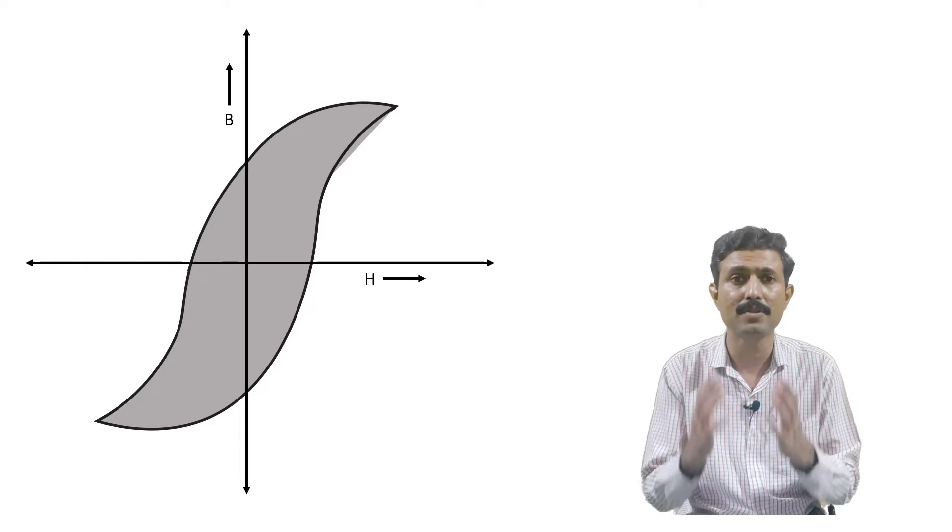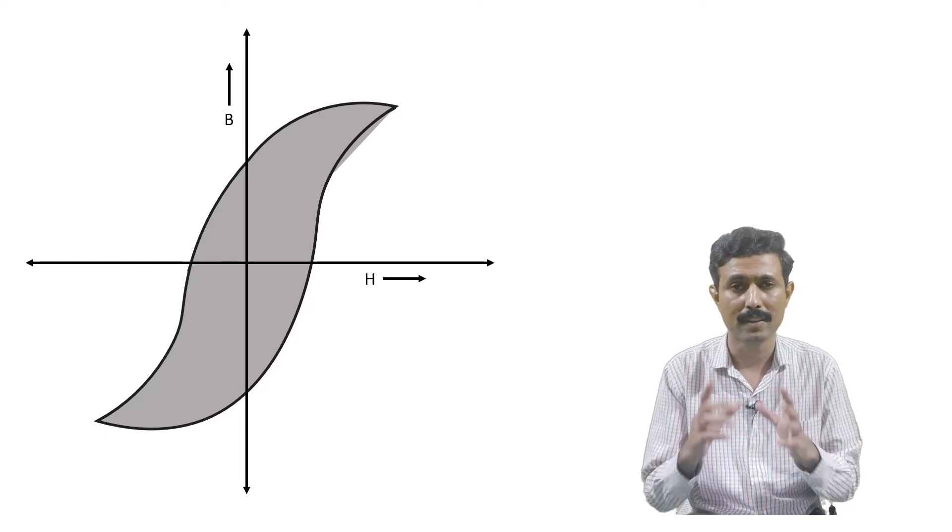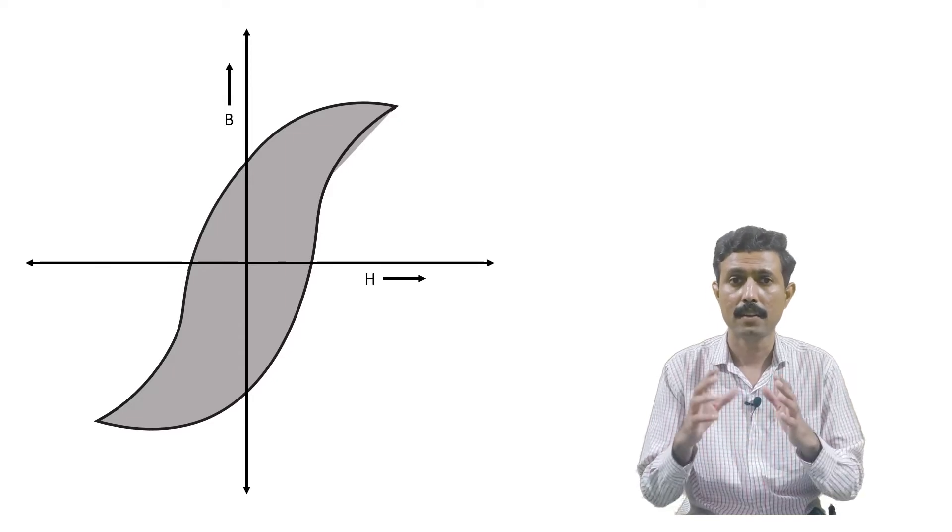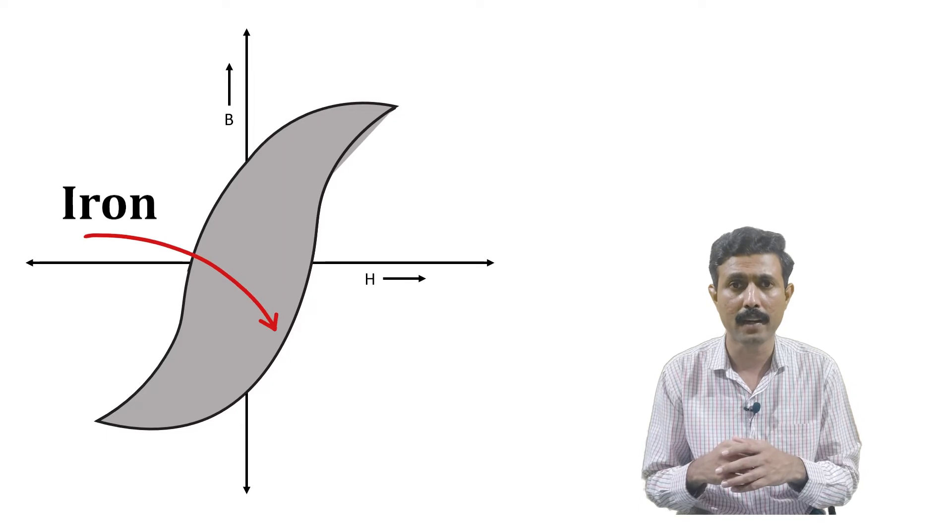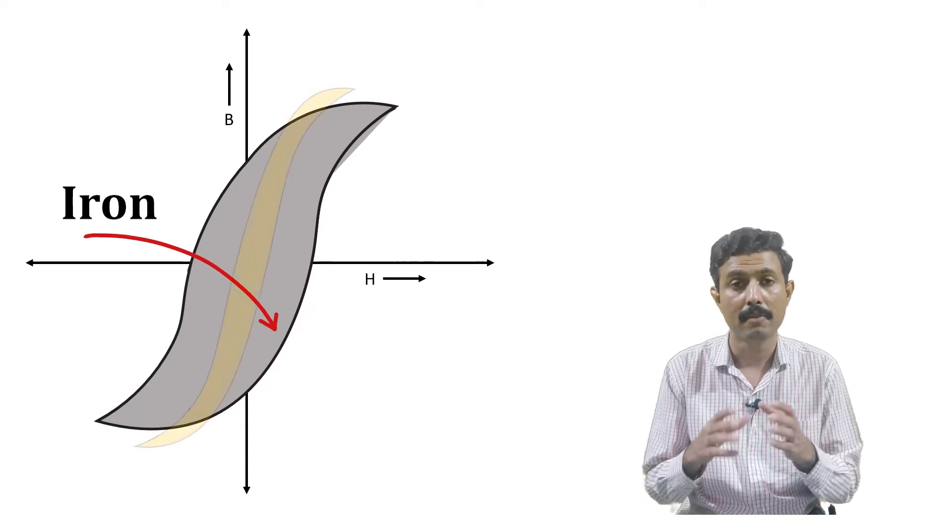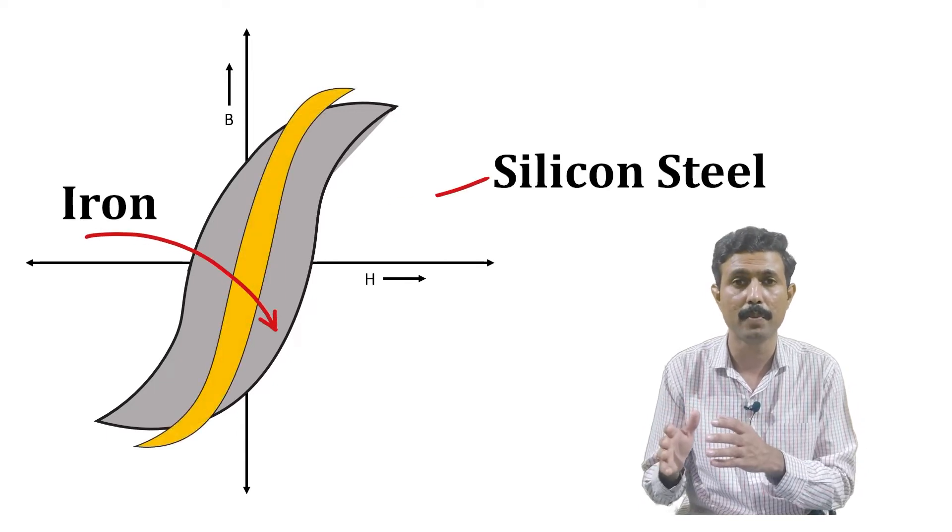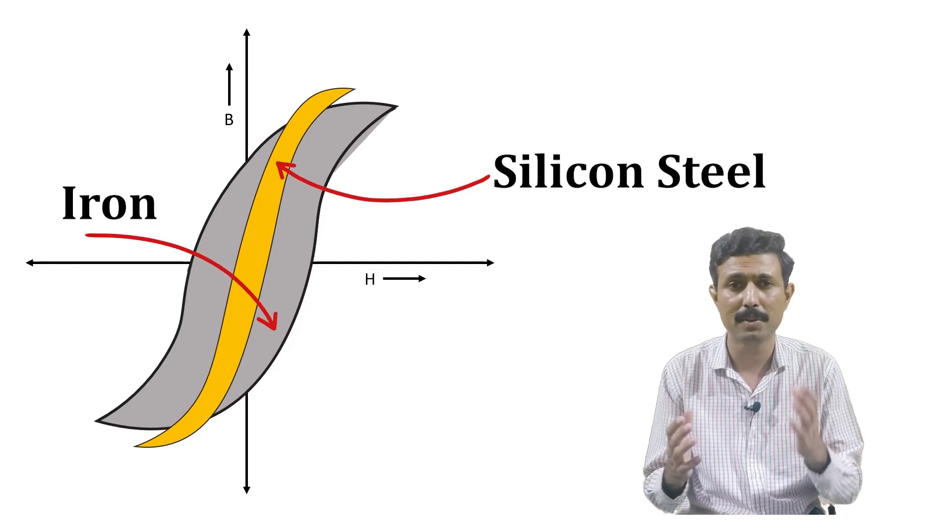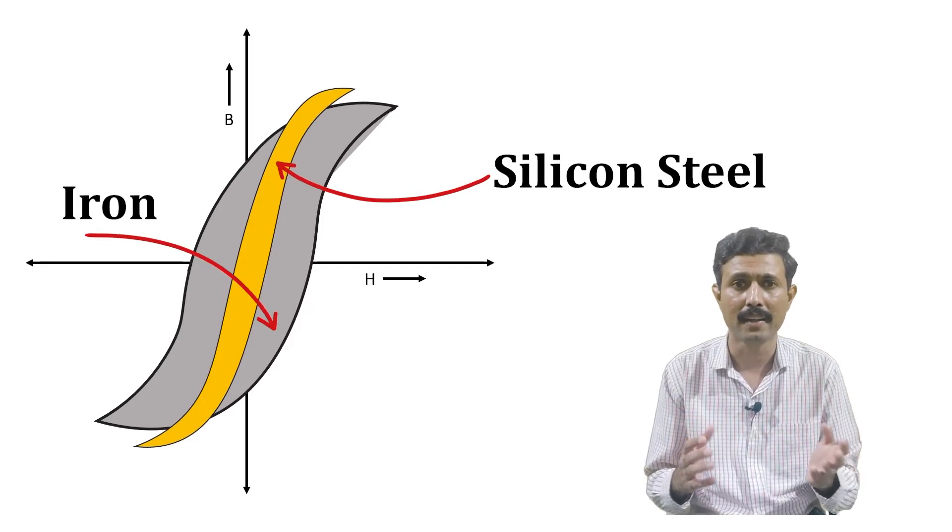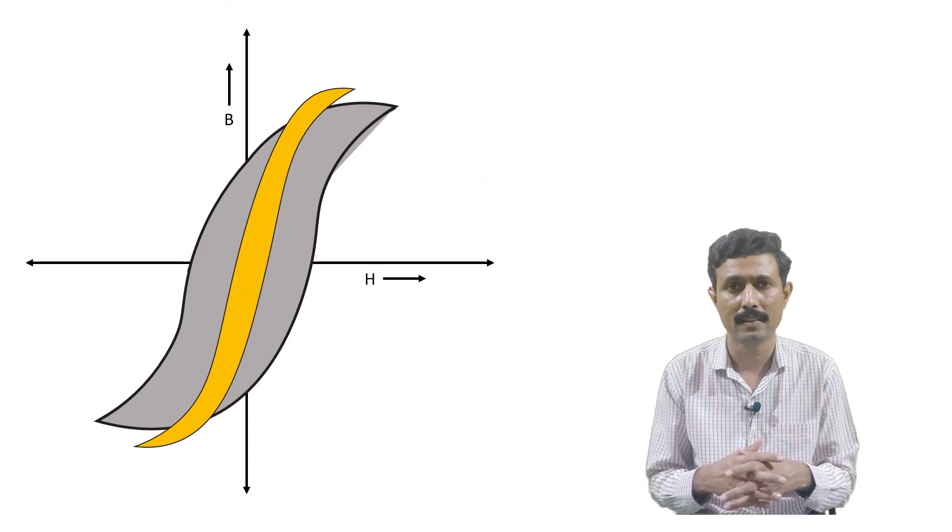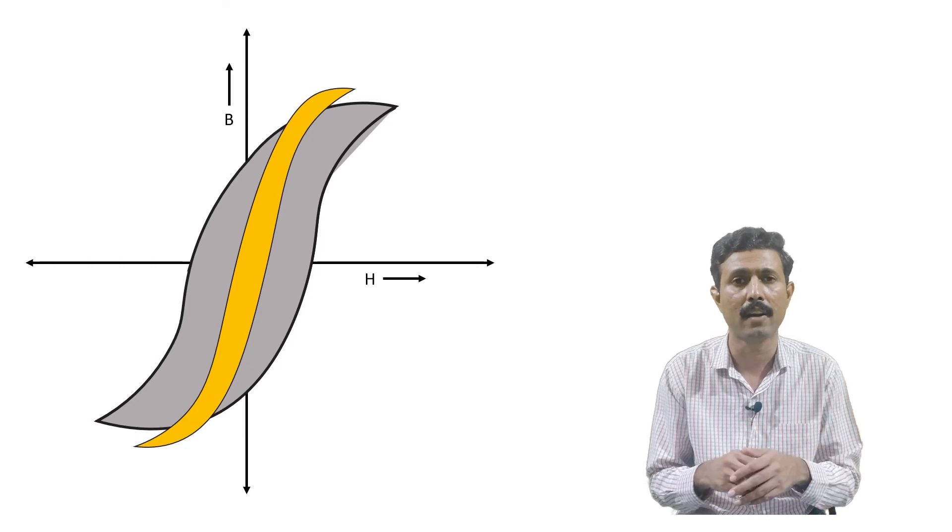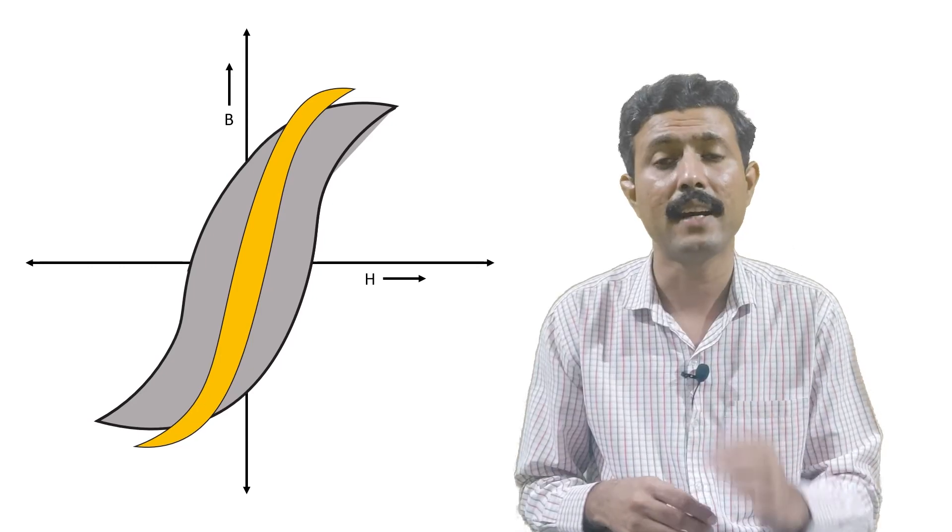So now how we can reduce the hysteresis loss? To understand that thing, let me show you the hysteresis loop of two materials. The first one is the hysteresis loop area of iron material, whereas the second one is the hysteresis loop area of silicon steel material. You can easily see the difference between hysteresis area of iron and silicon steel. The hysteresis area of silicon steel material is much smaller than the hysteresis area of iron material.